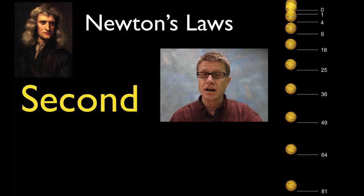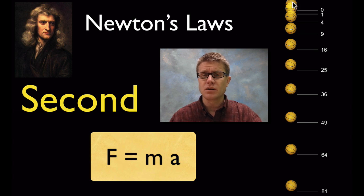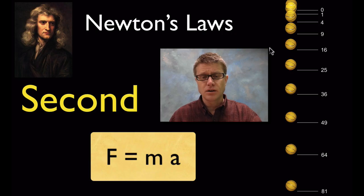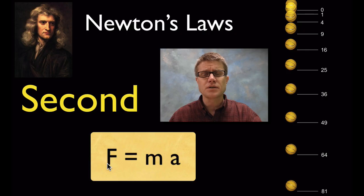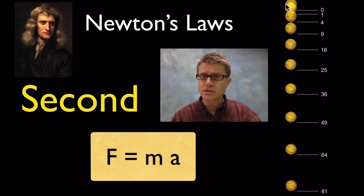Newton's second law is best represented by the equation you've probably seen before: force equals mass times acceleration. Most people know that but don't understand what it implies. If we have a basketball and you simply drop it, it doesn't fall at a constant rate — it's going to accelerate. The mass stays the same, the force of gravity stays the same, so it's going to get faster and faster. If we ever apply a constant force to something and the mass stays the same, it's going to accelerate.